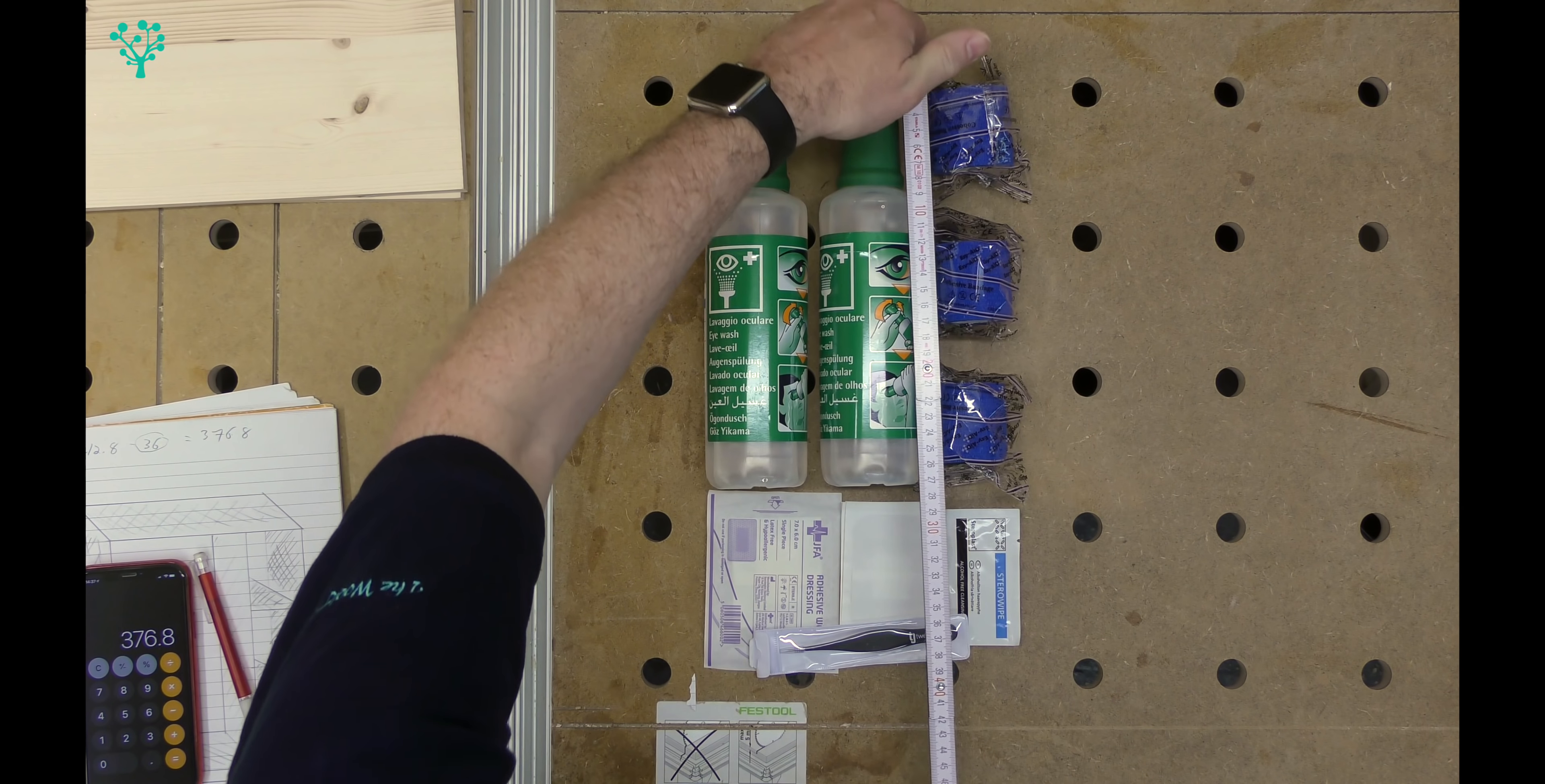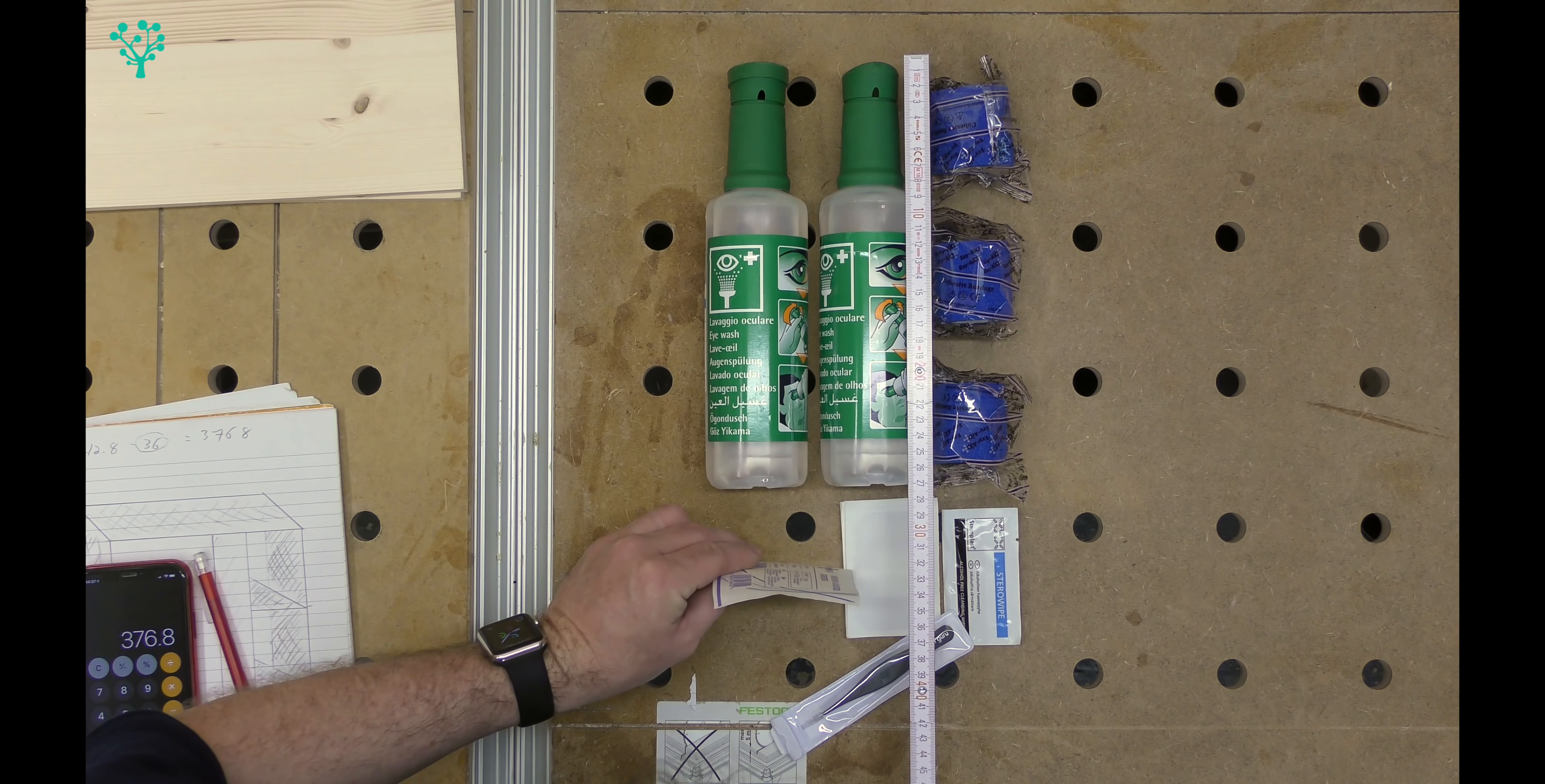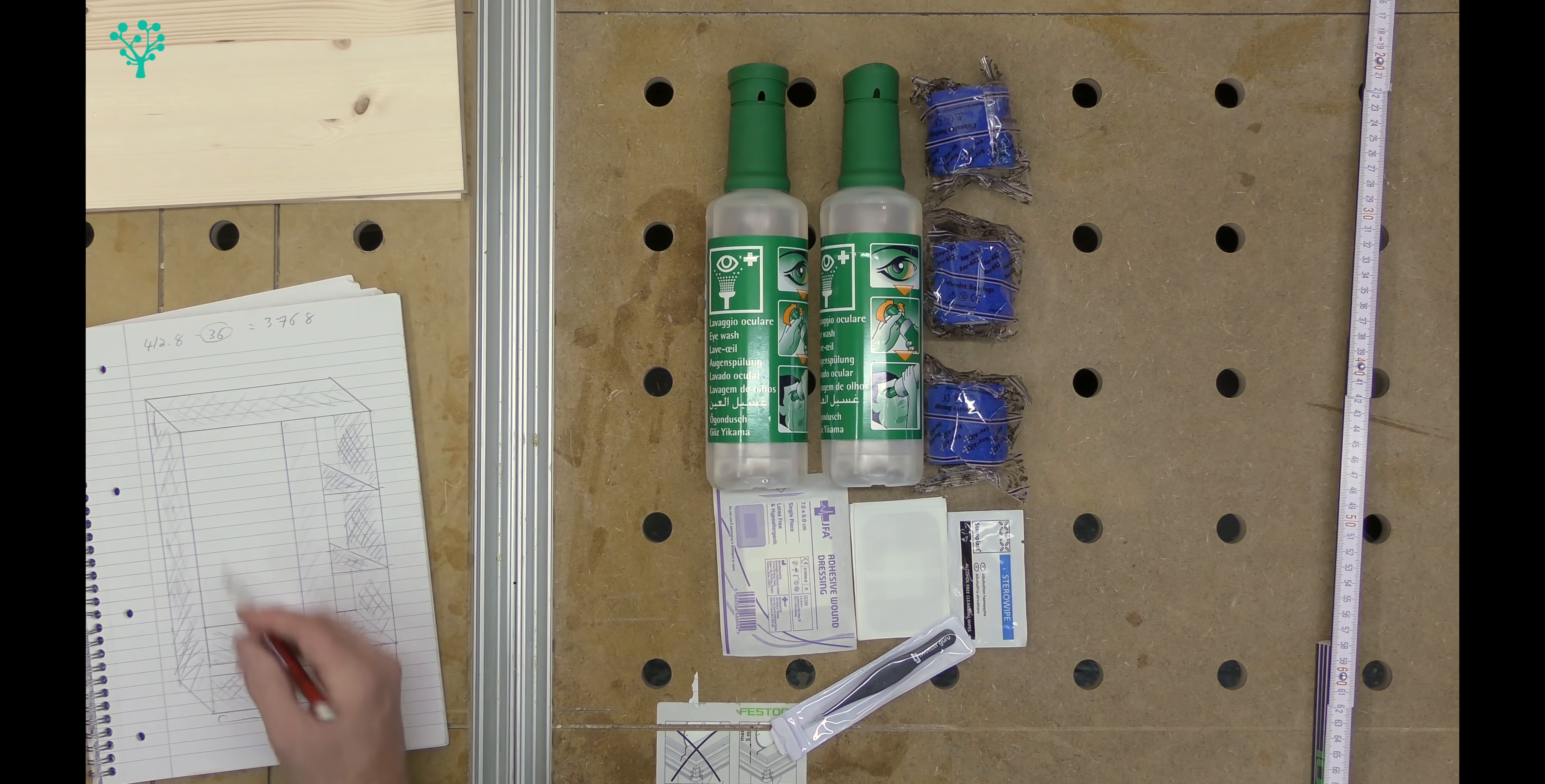If we take 36mm away from that 412.8, that will give me the internal dimensions of this cabinet. So 412.8 minus 36mm equals 376.8mm. That takes me to round about there, which is pretty good because these are actually on their side. So that's going to give me quite a lot of depth for storing multiple versions. And it gives me a nice pleasing ratio. So we're going to go with 412.8.